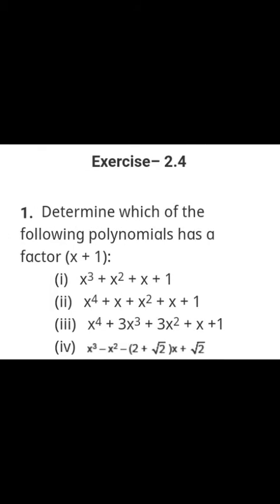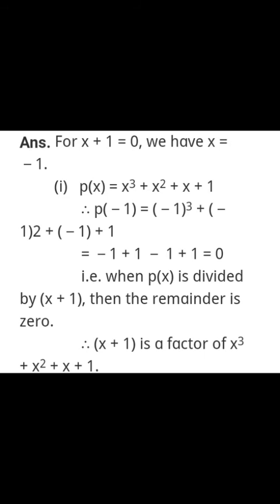Exercise 2.4, Question 1: Determine which of the following polynomials has (x+1) as a factor. For x+1 = 0, we get x = −1. Put x = −1 in p(x). After correct calculation we get 0, which means p(x) is divisible by (x+1), so the remainder is 0. This implies that (x+1) is a factor of x³ + x² + x + 1.